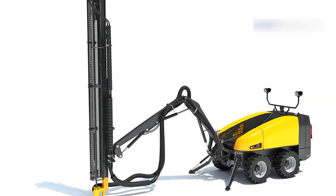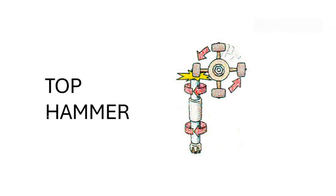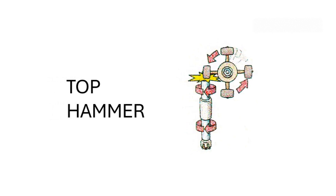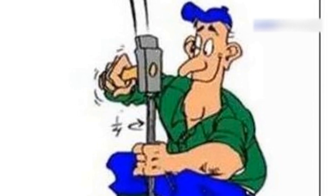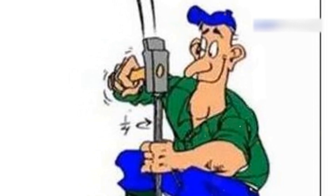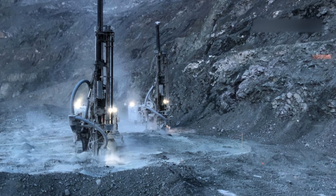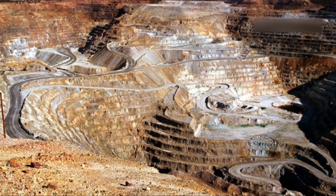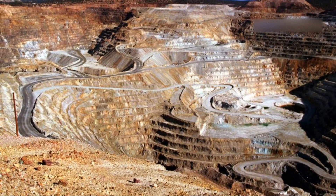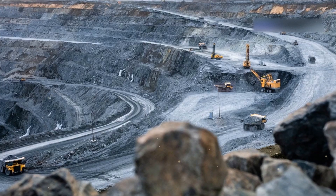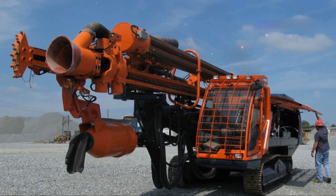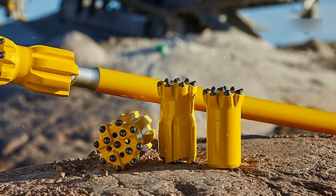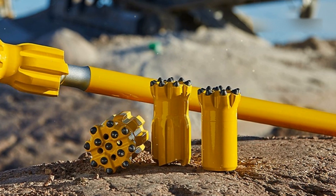Let's talk about the top hammer drill, a different breed of drill. Unlike DTH drills, top hammer drills deliver impact energy from above. A heavy hammer strikes a drill rod, transmitting force to the drill bit. Top hammer drills excel in shallow drilling up to 50 feet deep. Effective in medium to hard rock formations, they break tough layers quickly. Their versatility is a major advantage — they can be mounted on various platforms from small rigs to large units, and they're simple to operate and maintain.